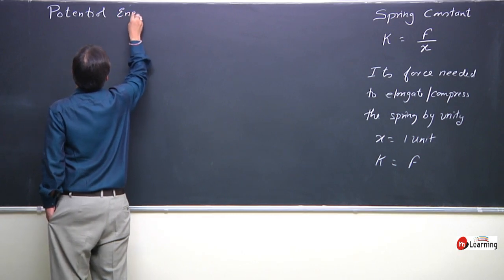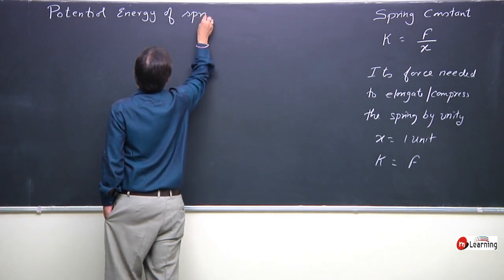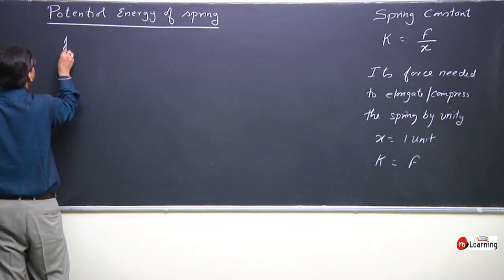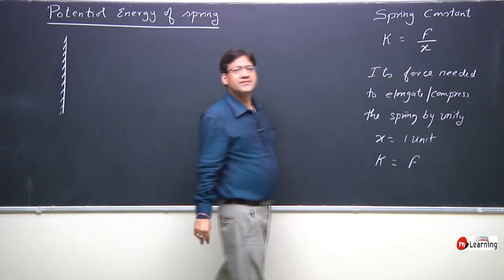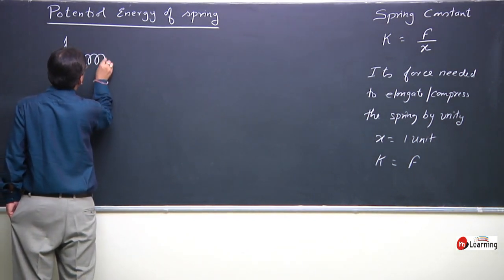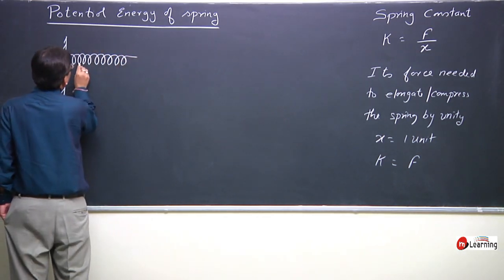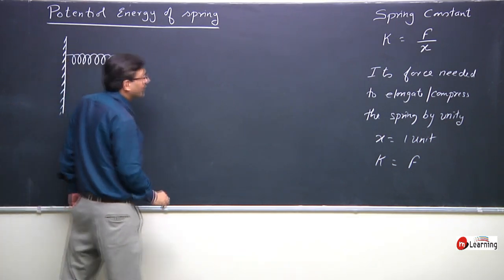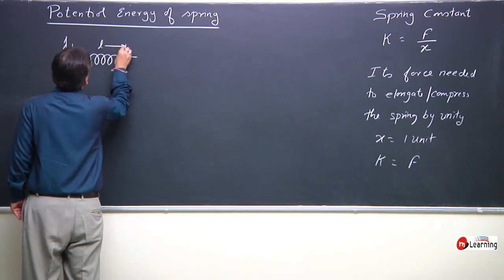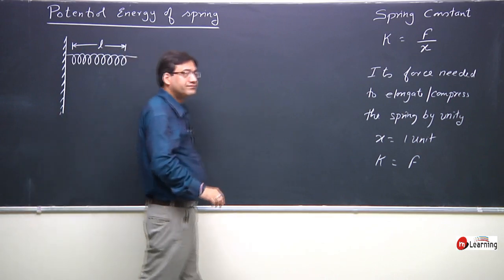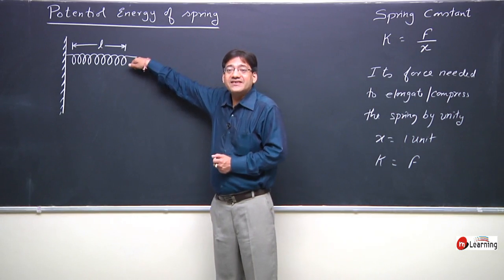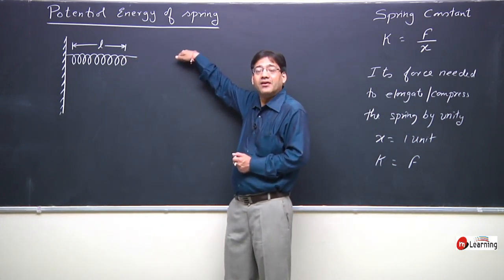Potential energy of spring. This is a spring at its natural length. The spring at its natural length has nine turns and a natural length L. Now I wish to elongate the spring, or I wish to compress the spring.